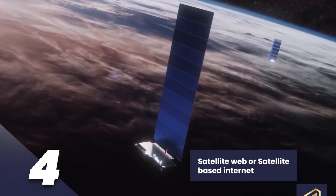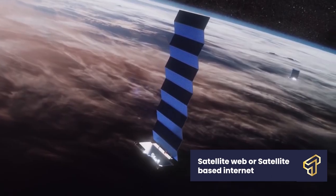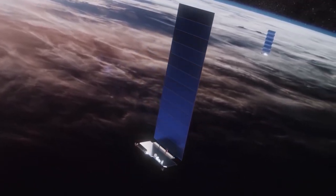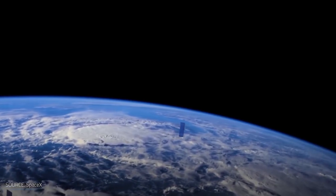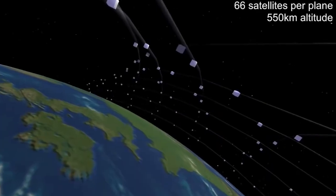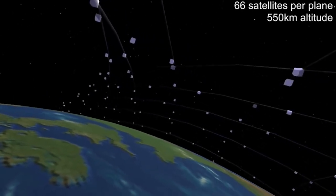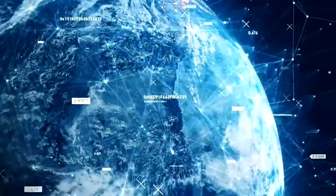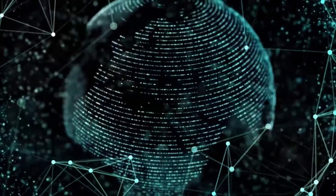Number 4: Satellite web or satellite-based internet. Satellite-based internet is a technology that is designed to gain access to the internet by using communication satellites. These satellites are usually geostationary, which means that they are specifically positioned approximately 22,300 miles above the equator so that it remains in the same spot over the Earth.